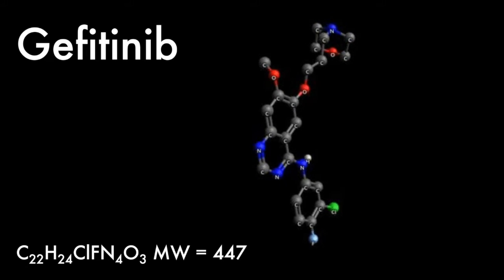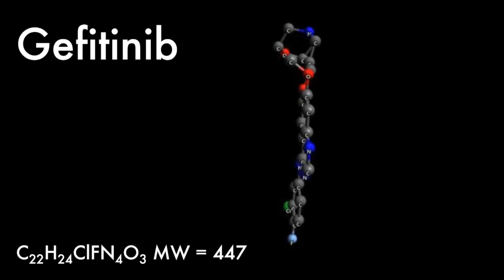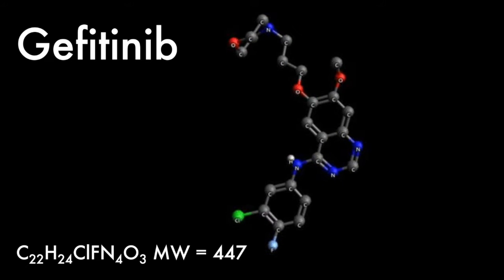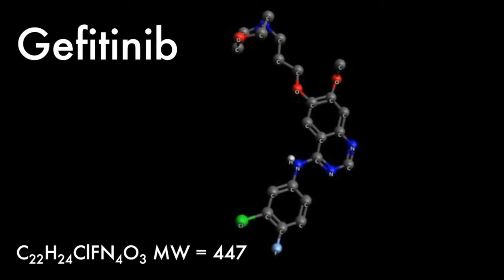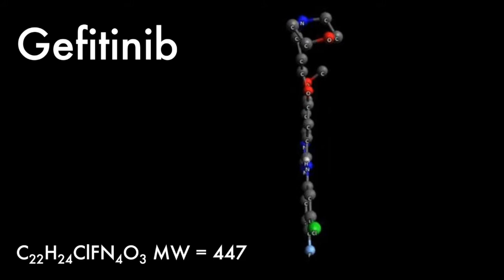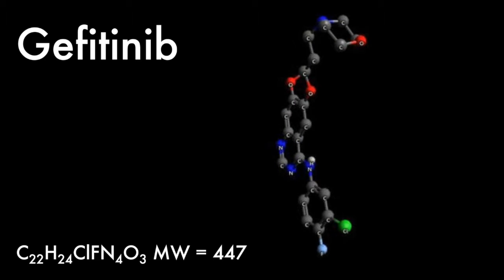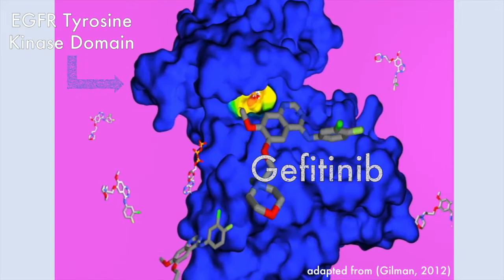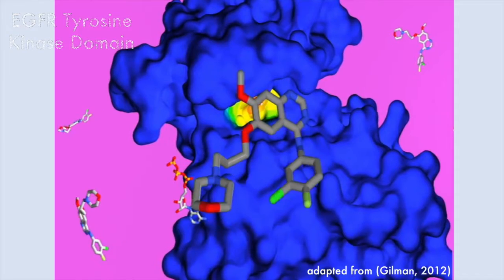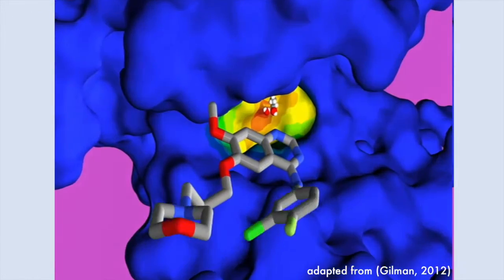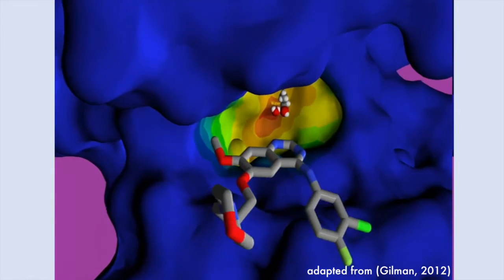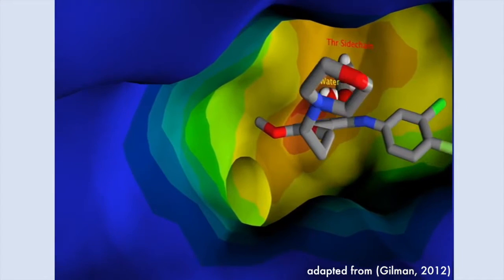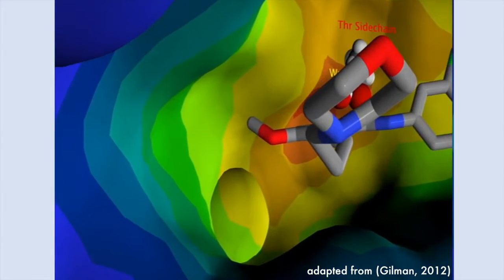Gefitinib, a tyrosine kinase inhibitor, is effective in halting disease progression for approximately 8 to 13 months in non-small cell lung cancer patients with L858R mutations. This 4-aminoquinazoline competitively inhibits ATPase activity of the tyrosine kinase by occupying its ATP binding site.